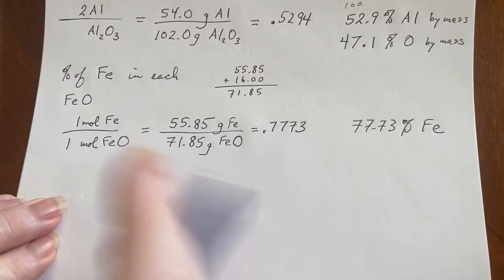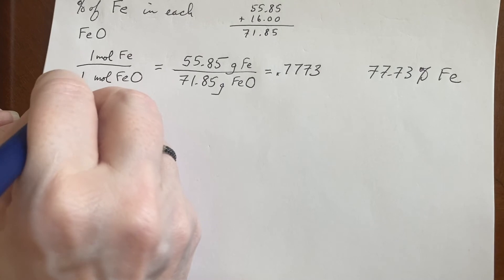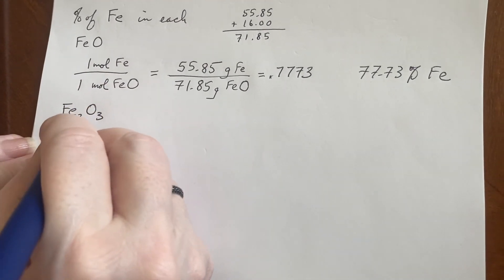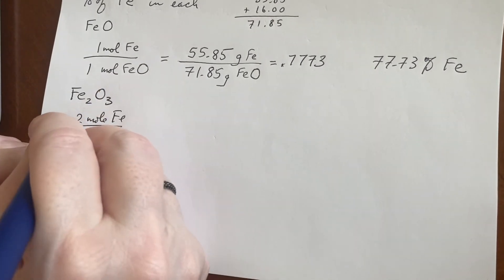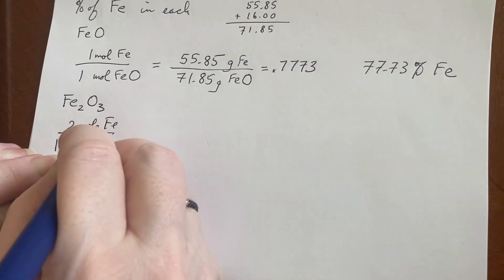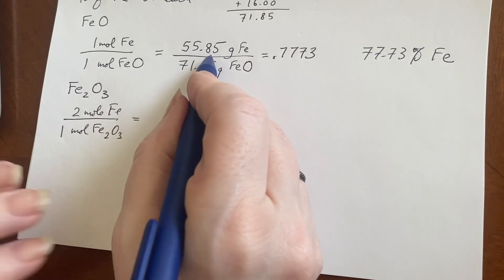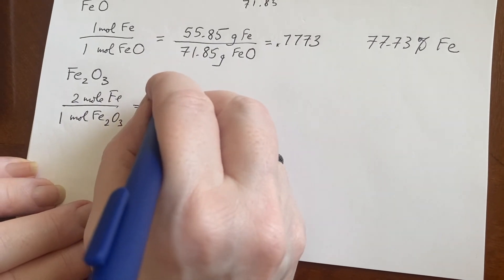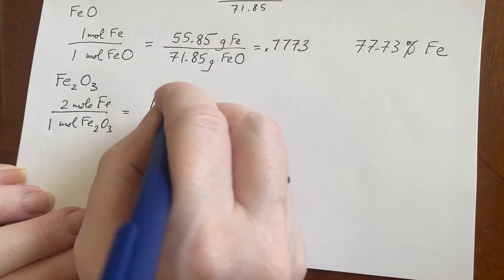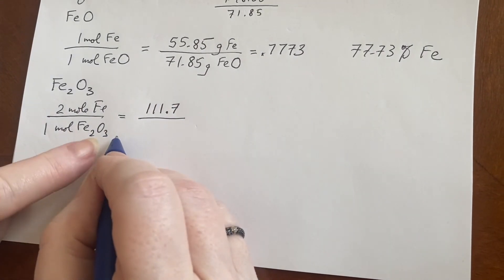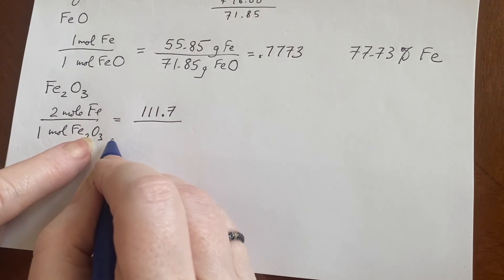Now let's look at the other one. It is Fe2O3. So there are two moles of iron in every one mole of Fe2O3. I'm going to have to double the 55. That's going to give me 111.7.